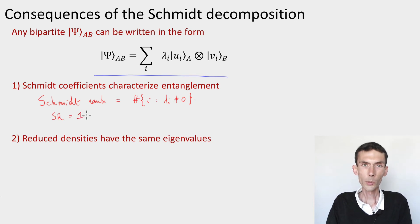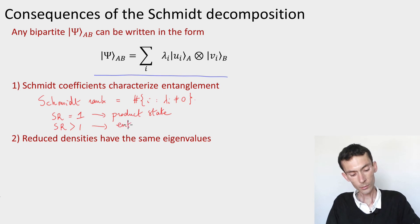Whereas if the Schmidt rank is larger than one, then we have a state that's not a product state and we have an entangled state. And in a certain way, the higher the Schmidt rank, the more the entanglement. This is one way that one could quantify entanglement. There's other ways that we'll see later in the course, but these will always be computed from the Schmidt coefficients.